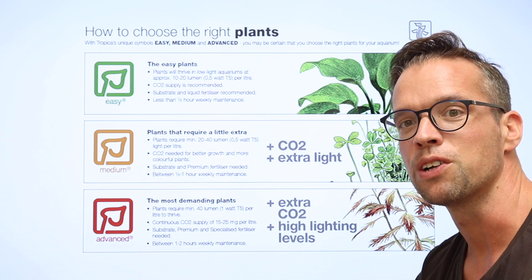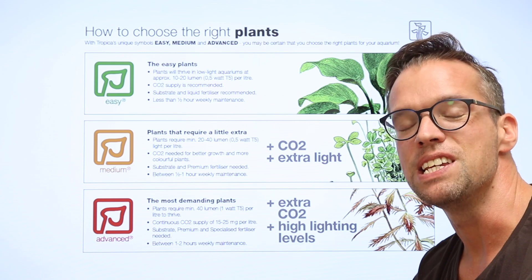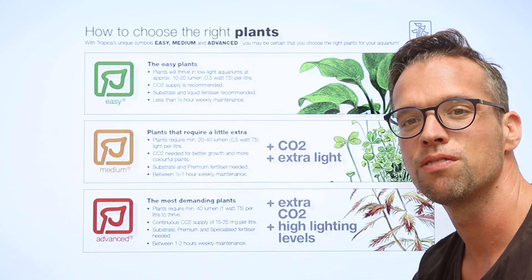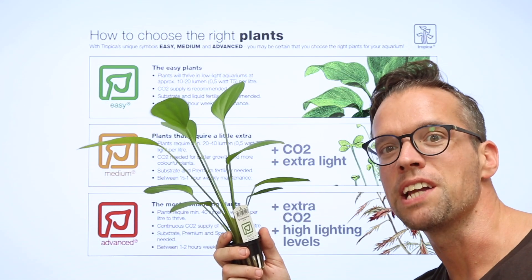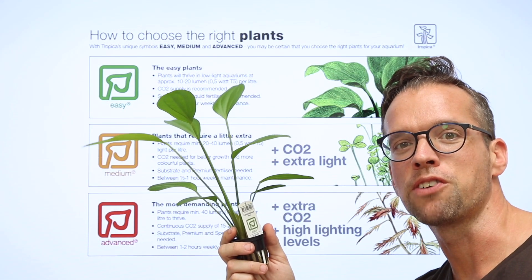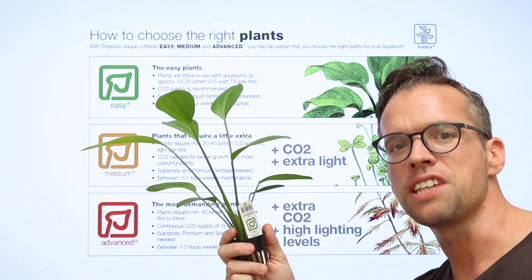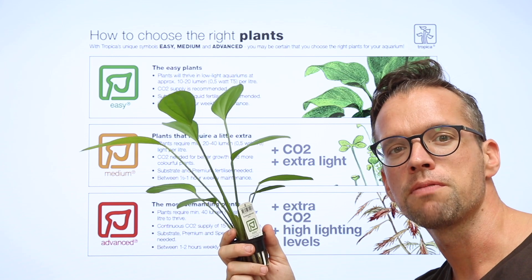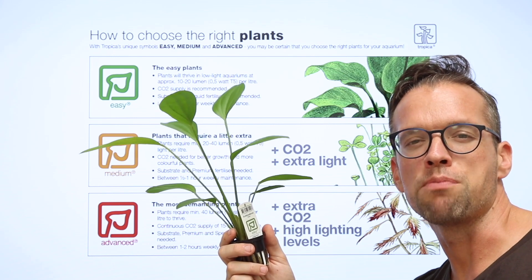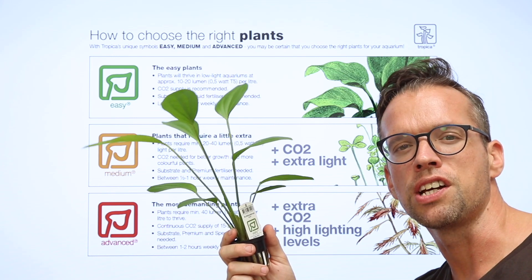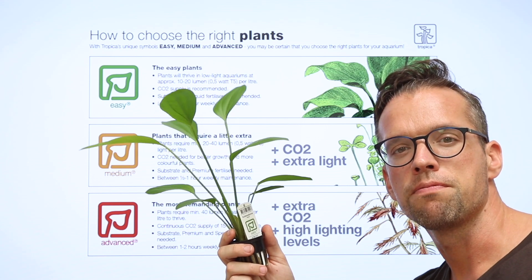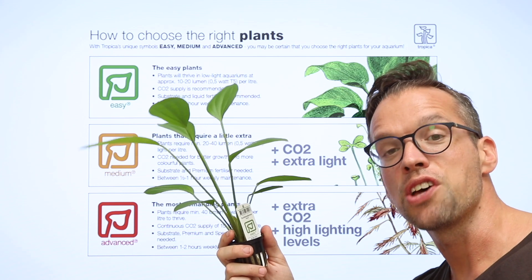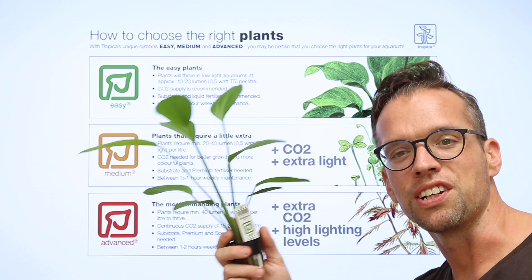We have three main plant groups: easy, medium and advanced, which are color coded onto each plant label. Easy plants are great for beginners with most kit aquariums because they grow well in low lighting. They don't need CO2 injection to grow but it is required to get the best results. Substrate or soil and premium nutrition liquid fertilizer is also recommended. Easy plants need the least maintenance, usually less than 30 minutes per week depending on the tank size.